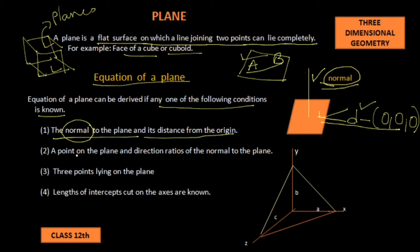Now let us see condition number 2: a point on the plane and direction ratios of the normal to the plane. So if a point (x, y, z) on this plane is known and the direction ratios of this normal are known, then also the equation of the plane can be determined.